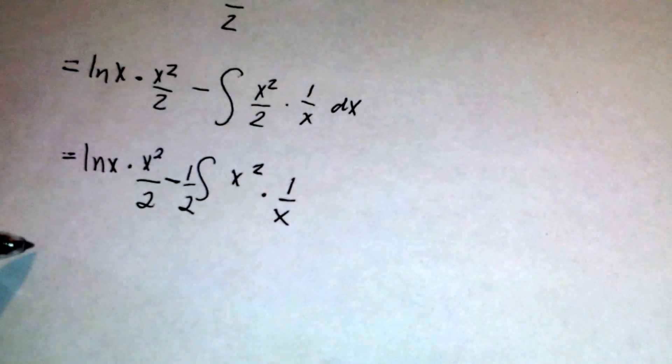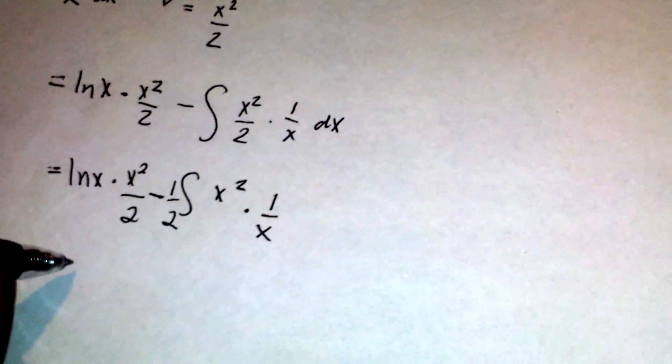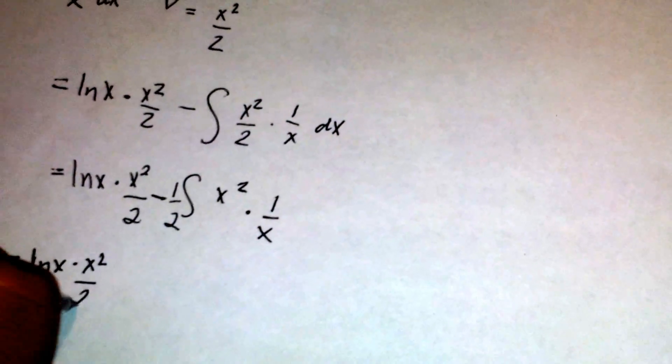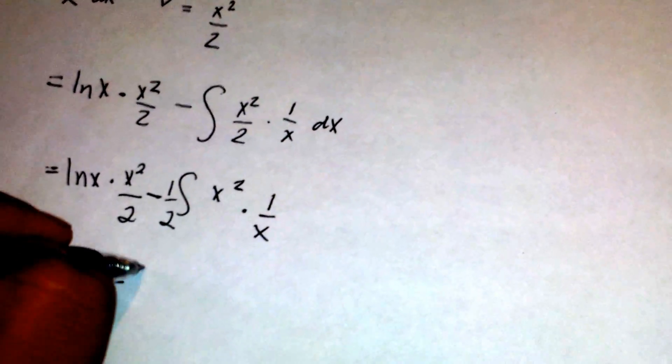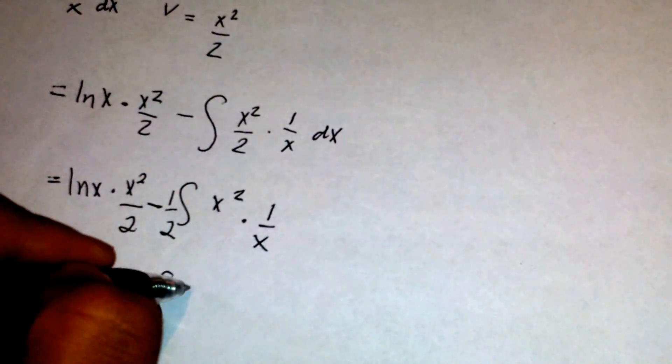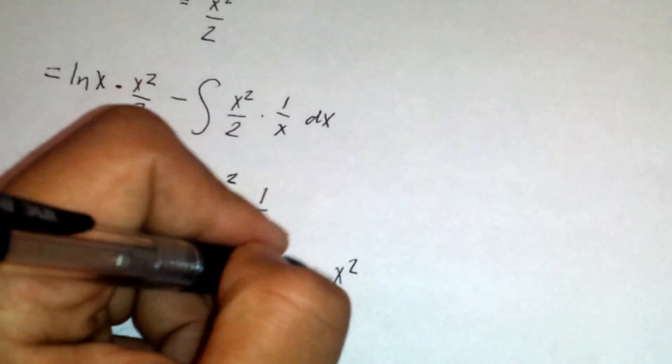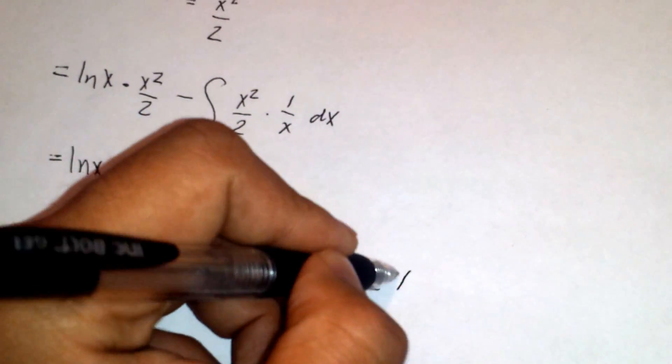This simplifies to ln x times x squared over 2, because the left side remains the same. Then we have 1 half times the integral of x squared over x. Now x squared over x is just x.